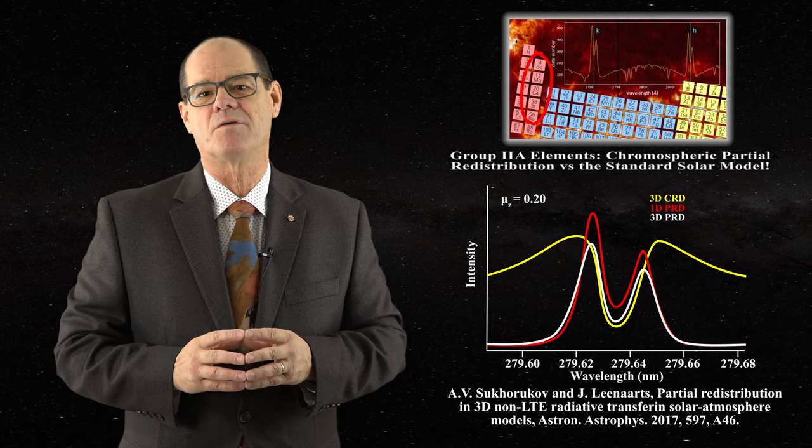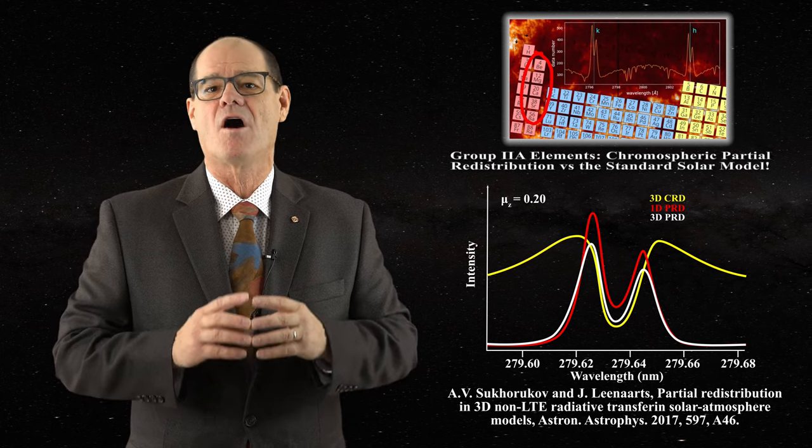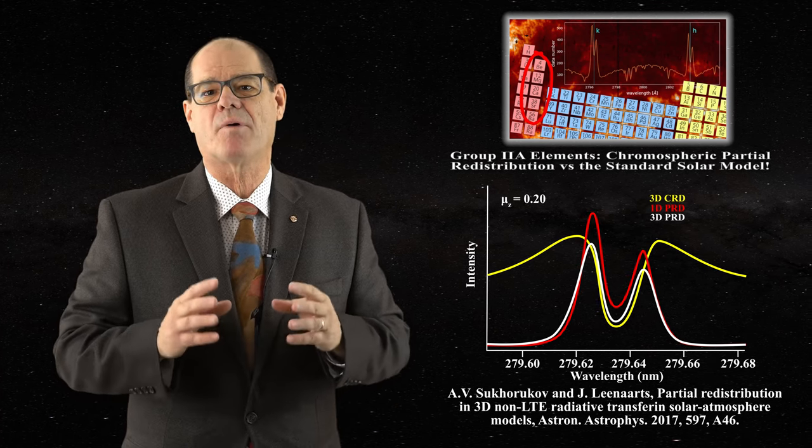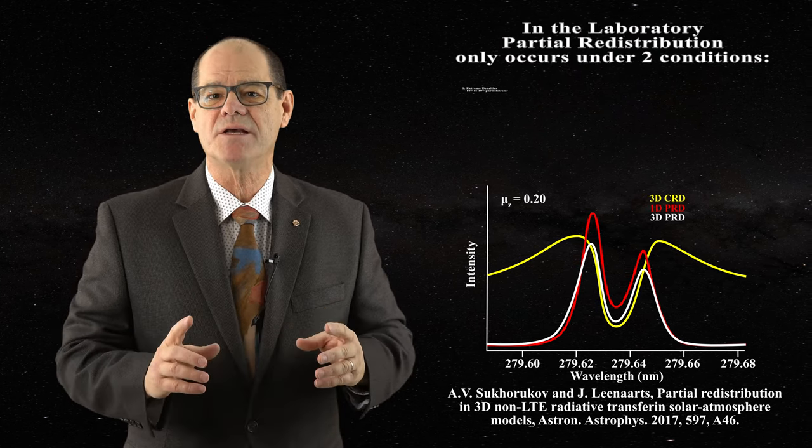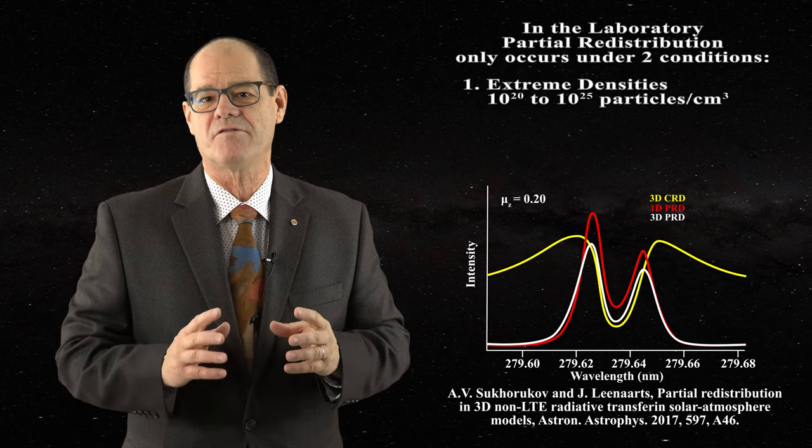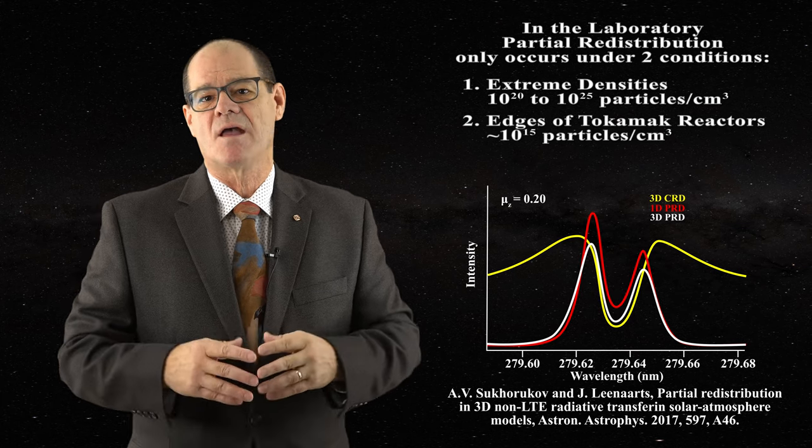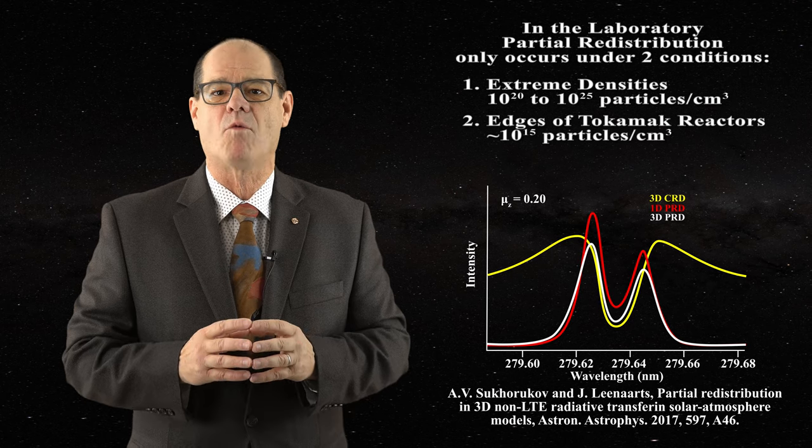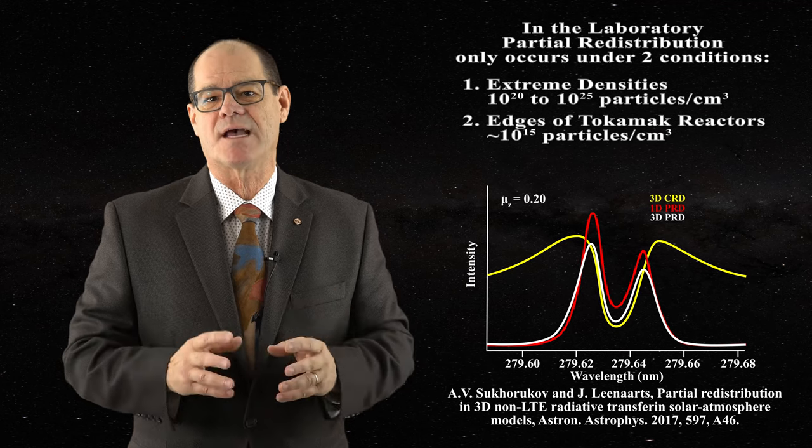The central lesson in that video was that the chromospheric densities advanced by the standard solar model are much too low. In the laboratory I explained that partial redistribution only occurs under one of two conditions: either extreme densities, namely densities on the order of 10 to the 20th or 10 to the 25th particles per centimeter cubed, or at plasma edges within tokamak reactors. In that case it is interaction of the plasma with condensed matter in the wall of the reactor which is the key concern, not the fact that we are examining a plasma.